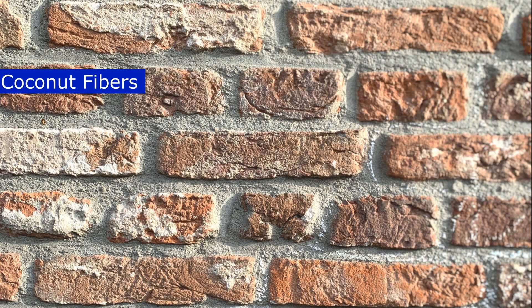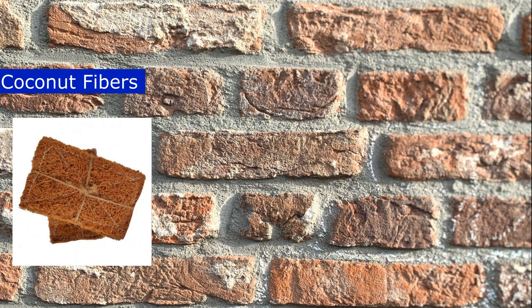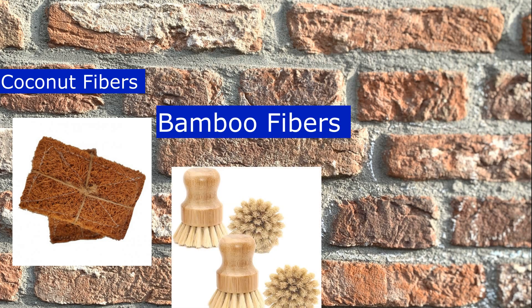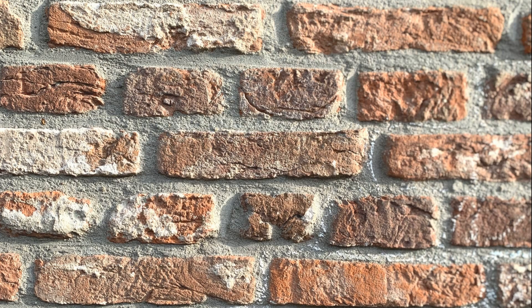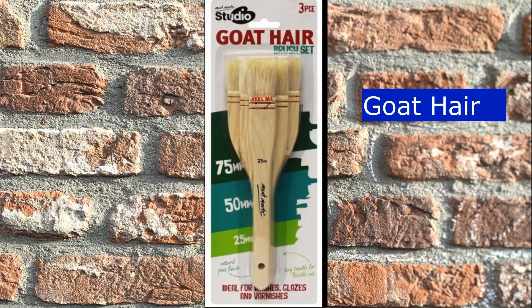We can use coconut fibers, bamboo fibers, and jute as natural scrubbers. These are already available in the market. For some specific applications, we can also consider goat hair.